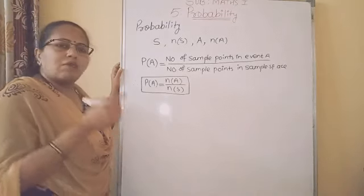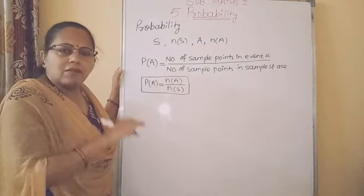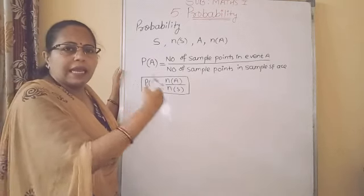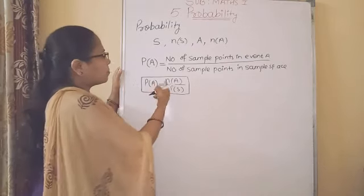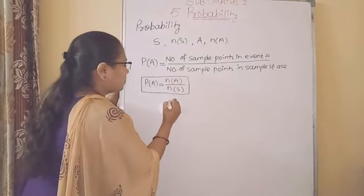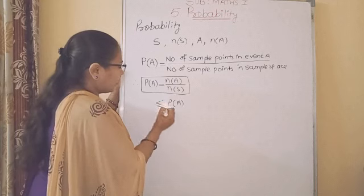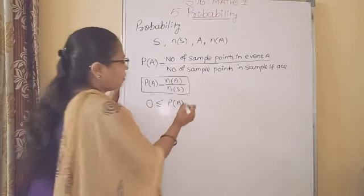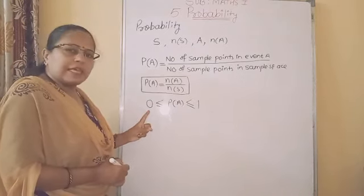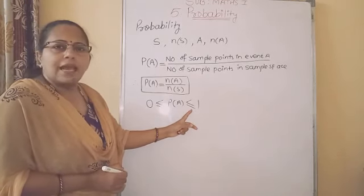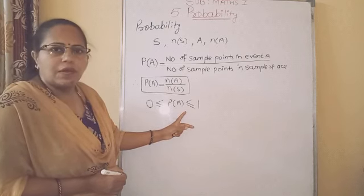Always remember that the probability of any event is greater than or equal to 0, or less than or equal to 1. This probability of event A may be greater than or equal to 0 or less than or equal to 1. It is never less than 0, and it is never greater than 1. This point we have to remember.